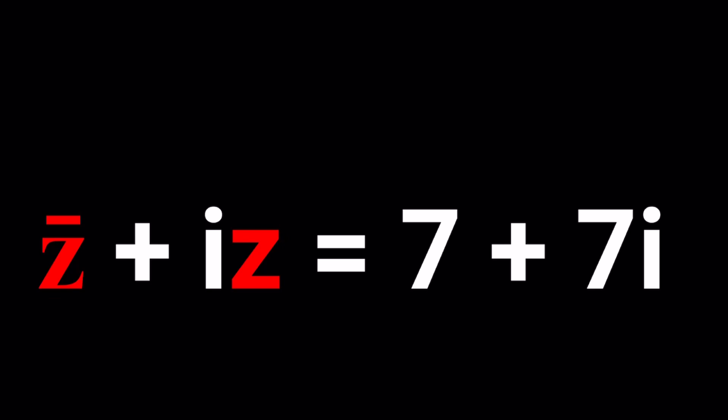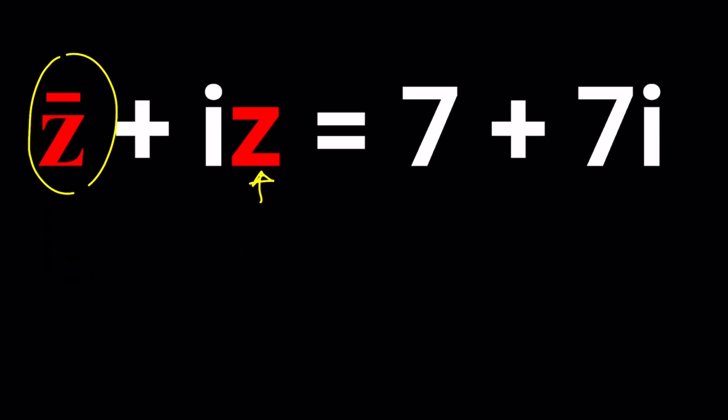Z is a complex number. If you are new to complex numbers, go ahead and check out my lecture videos. I made a playlist. So we have Z bar, which is the complex conjugate of Z, plus IZ, which is I times Z, equals 7 plus 7I. And now we're going to be solving for Z. And I think I'll be presenting two methods. Let's start with the first one.